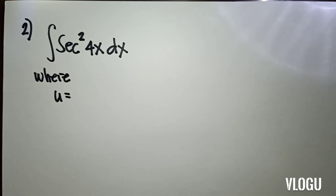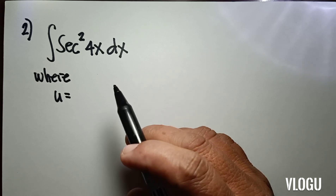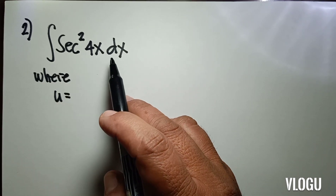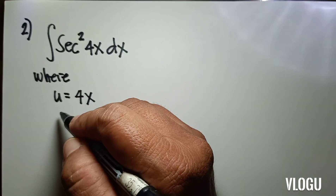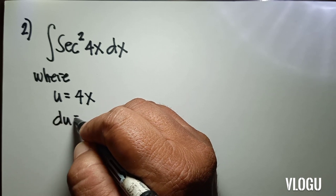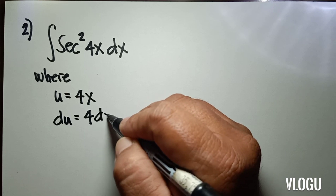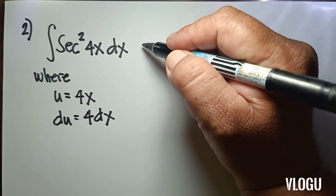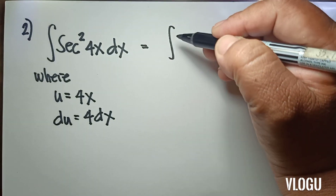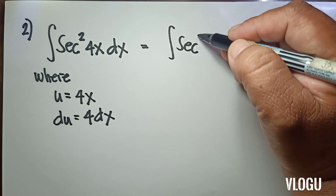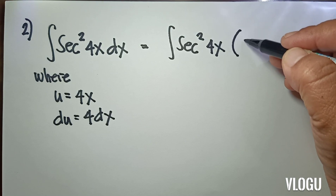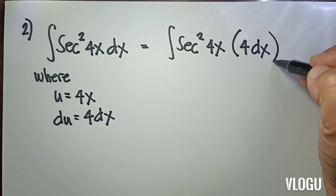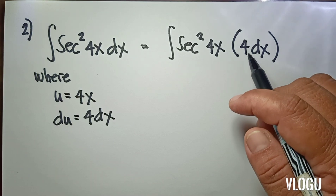The second example: the integral of sec²(4x) dx. Our u in the given is equal to 4x. So therefore, the derivative of 4x gives us du equal to 4 dx. We multiply 4 here, so we multiply 1/4 outside.